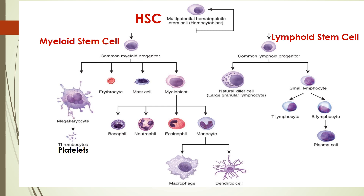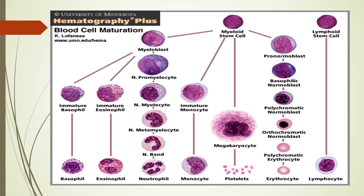The hematopoietic stem cell differentiates into myeloid and lymphoid stem cells. The lymphoid stem cell produces natural killer cells (large granule lymphocytes) and small lymphocytes — T lymphocytes and B lymphocytes. B lymphocytes, when stimulated by antigen, mature into plasma cells which produce antibodies. The common myeloid progenitor cell may differentiate into stem cells for megakaryocytes, RBCs, mast cells, and myeloblasts. Myeloblasts may differentiate into basophil, neutrophil, eosinophil, or monocyte lineages, and monocytes can further develop into macrophages.